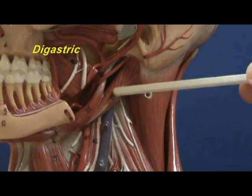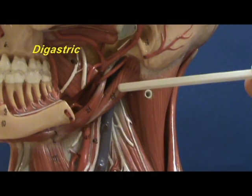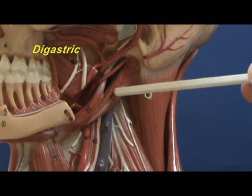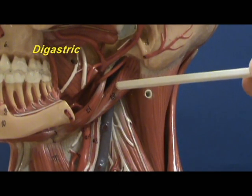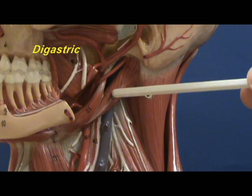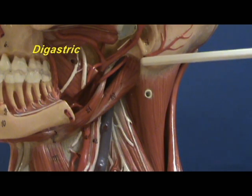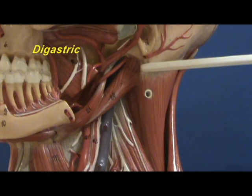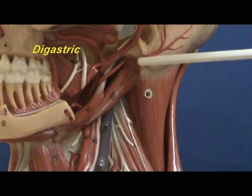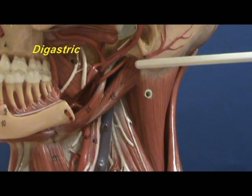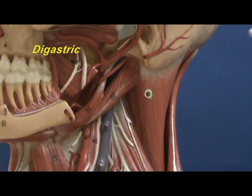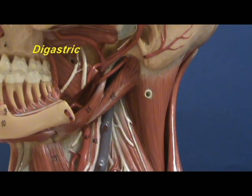You can only see the posterior belly here, which has an origin on the mastoid process of the temporal bone. We will see the anterior belly in another video. One of the actions of the digastric is to elevate the hyoid.